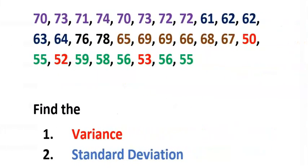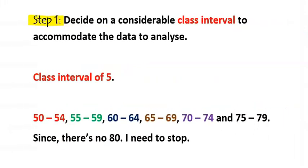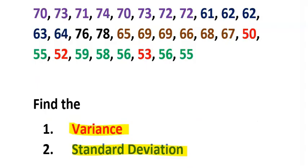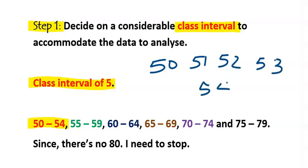Consider the following given data — find the variance and standard deviation. Step one: when given data, decide on a considerable class interval to accommodate the given data. Looking at the smallest number being 50 and the highest number being 78, let's consider a class interval of five.